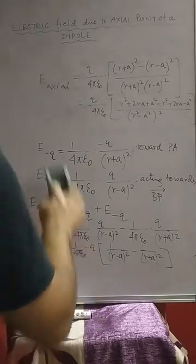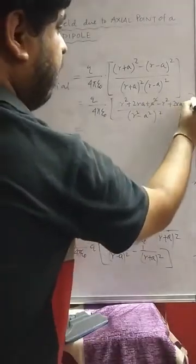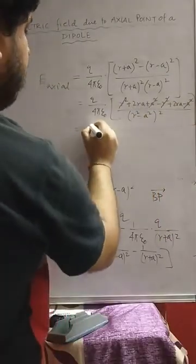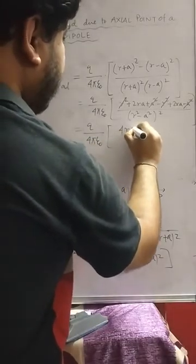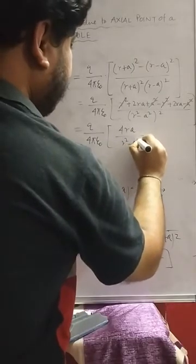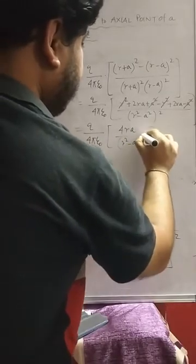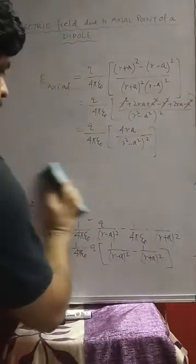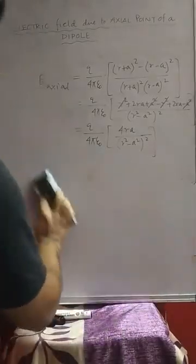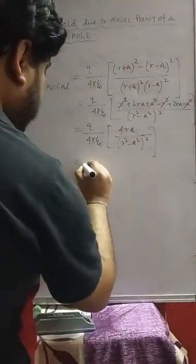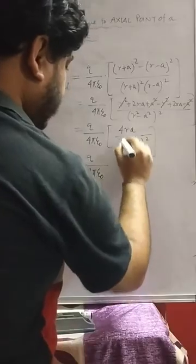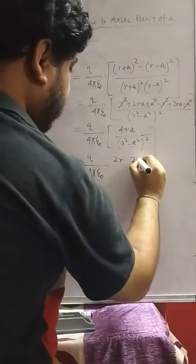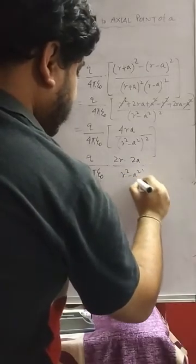After cancellation, a squared minus a squared and r squared minus r squared cancel out, leaving q by 4 pi epsilon 0 times 4ra by (r squared minus a squared) squared. We can split the term 4ra as 2r times 2a, giving q by 4 pi epsilon 0 times 2r times 2a by (r squared minus a squared) squared.